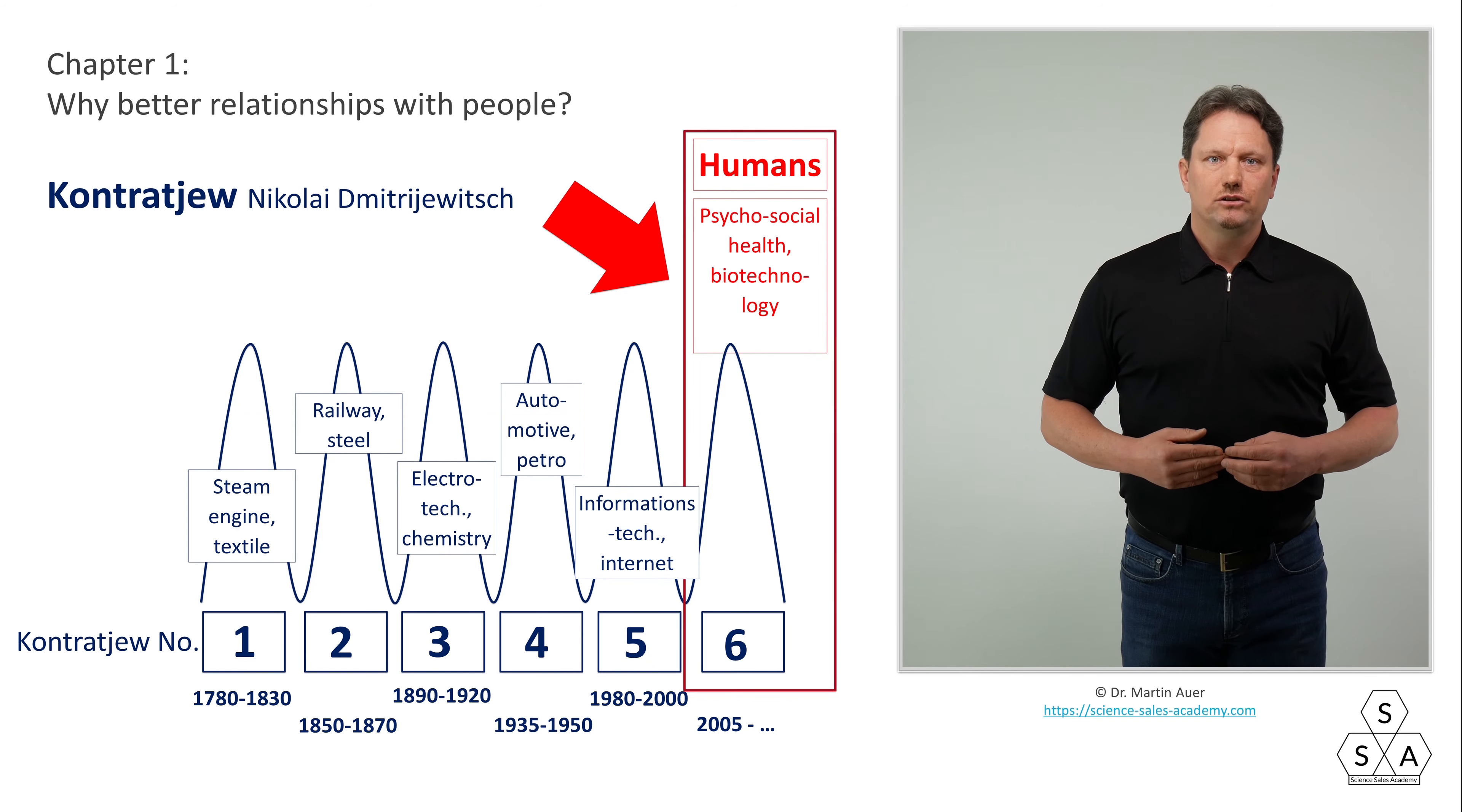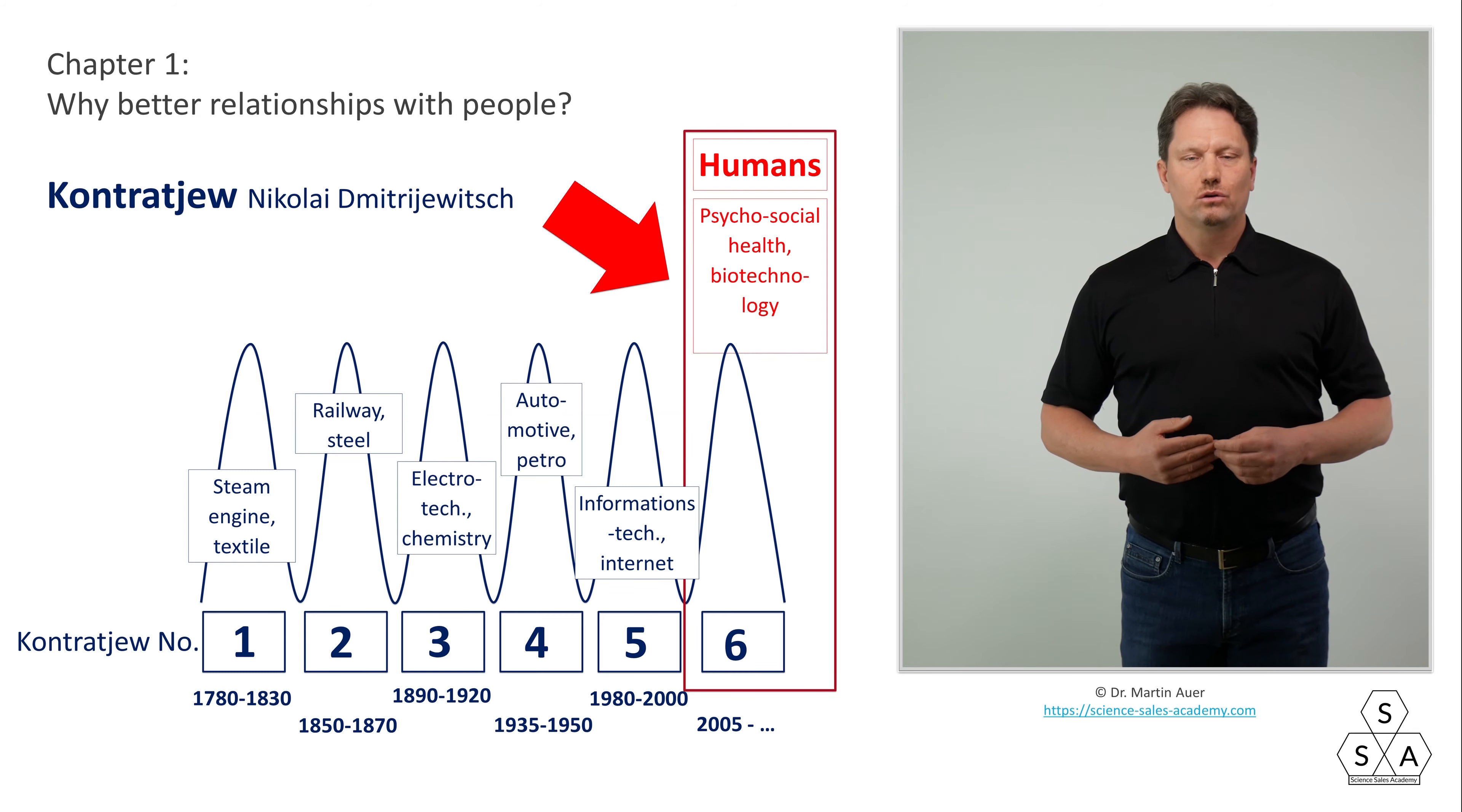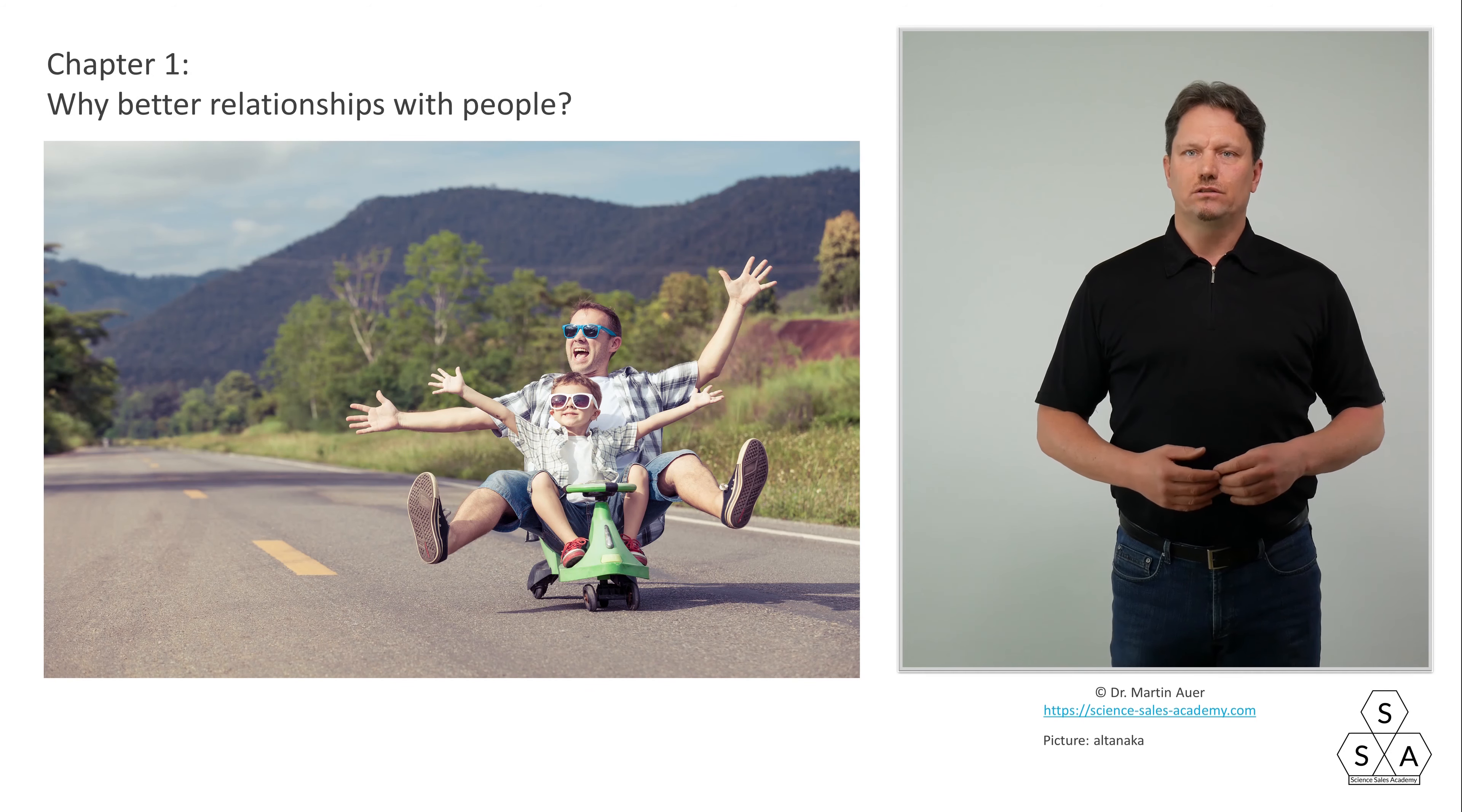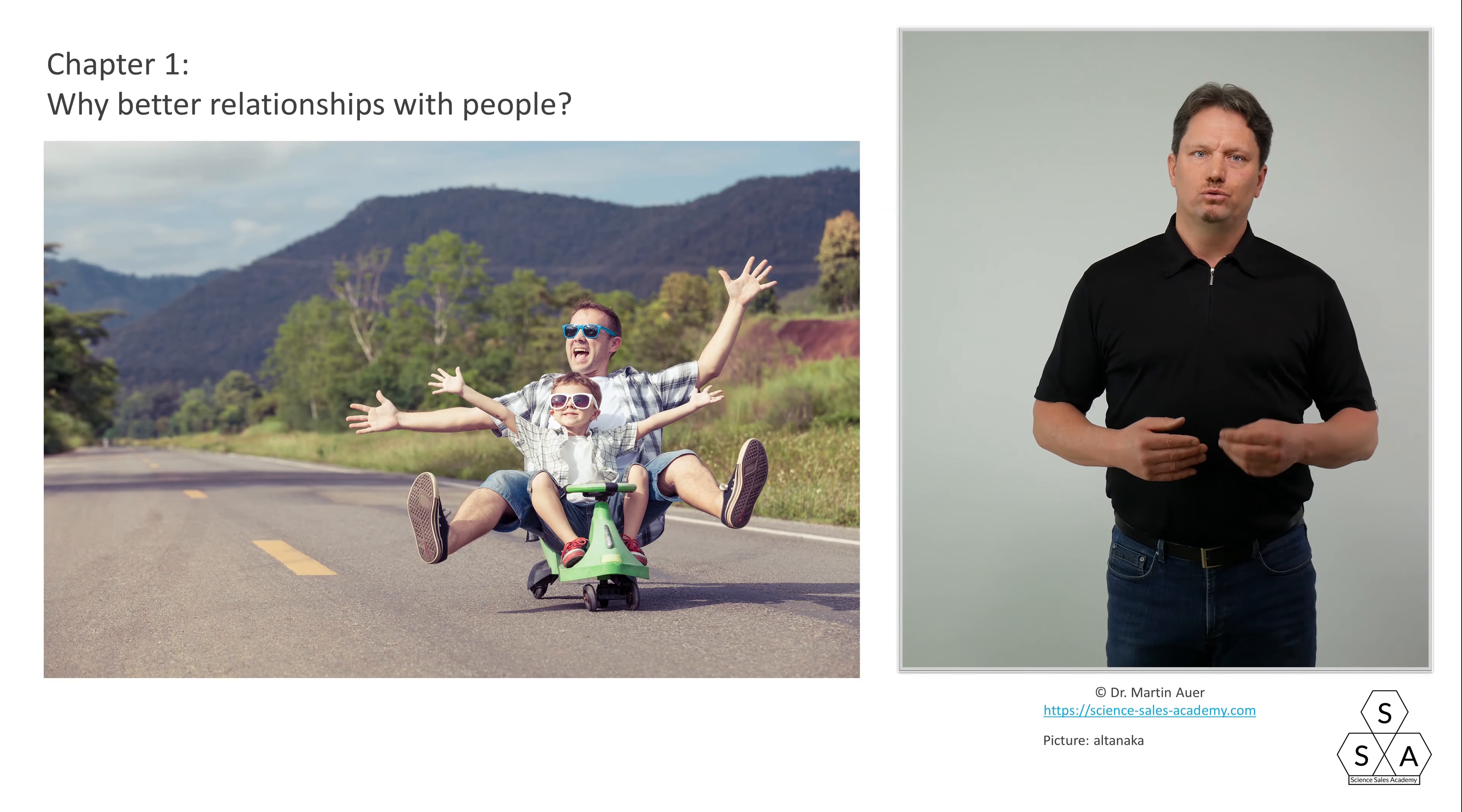Right now we are in the early stages of Kontratiev cycle number 6. And this cycle is about us, about us humans. It's about our own health, our psychosocial well-being. We humans want to be in the center of attention. For example, we live in a time when we as family fathers can go on parental leave for the first time ever in history, at least in Germany.